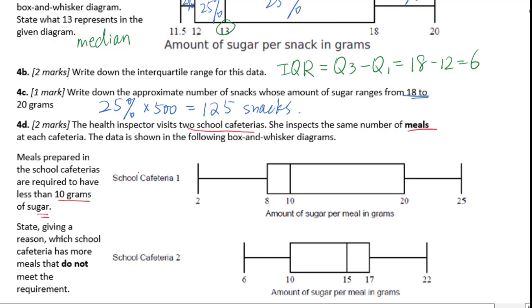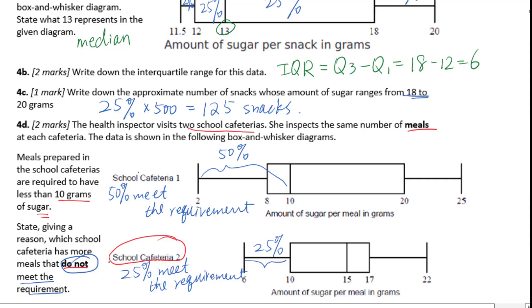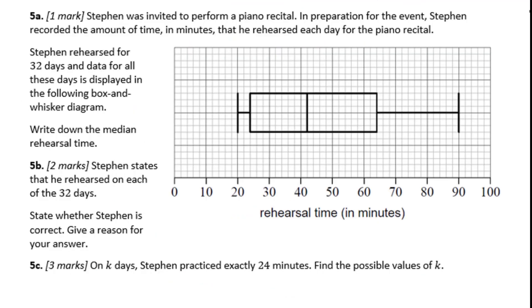State, giving a reason, which school cafeteria has more meals that don't meet the requirement. For school cafeteria 1, we could say 50% of the meals meet the requirement. For school cafeteria 2, only 25% of the meals meet the requirement. Therefore, school cafeteria 2 didn't meet the requirement.